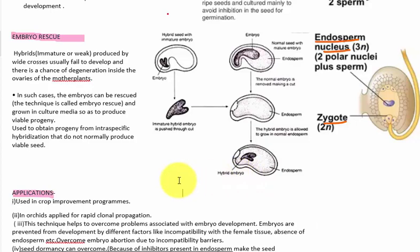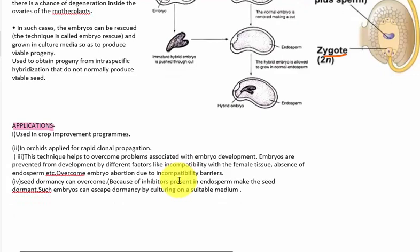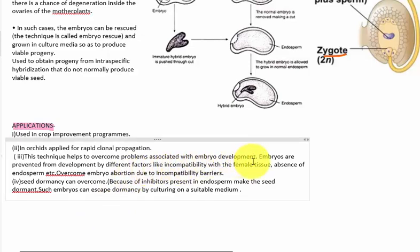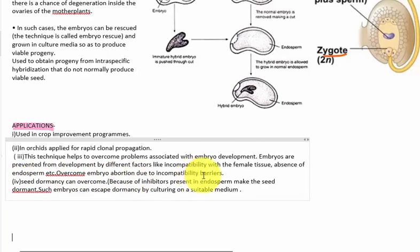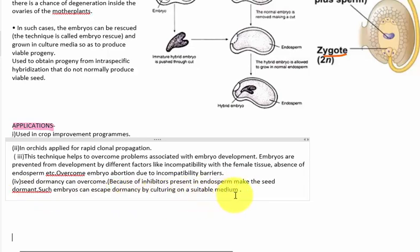The applications of embryo culture include use in crop improvement programs and rapid clonal propagation. This technique helps to overcome problems associated with embryo development, such as incompatibility with female tissue, absence of endosperm, or other factors preventing embryo development. Additionally, seed dormancy can be overcome — inhibitors present in the seed coat make the seed dormant, and such embryos can escape dormancy by culturing on a suitable medium.